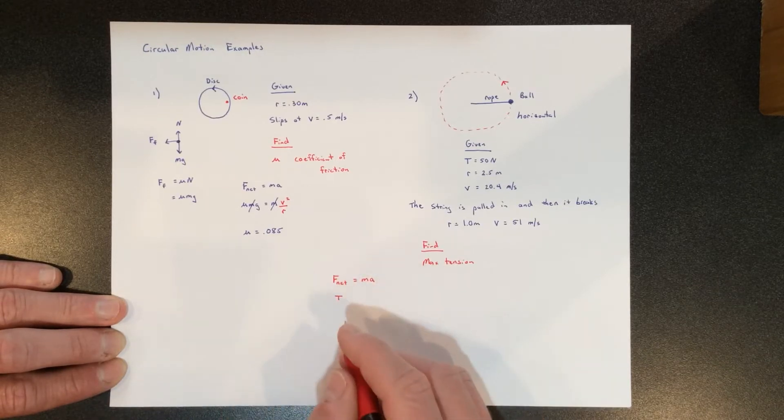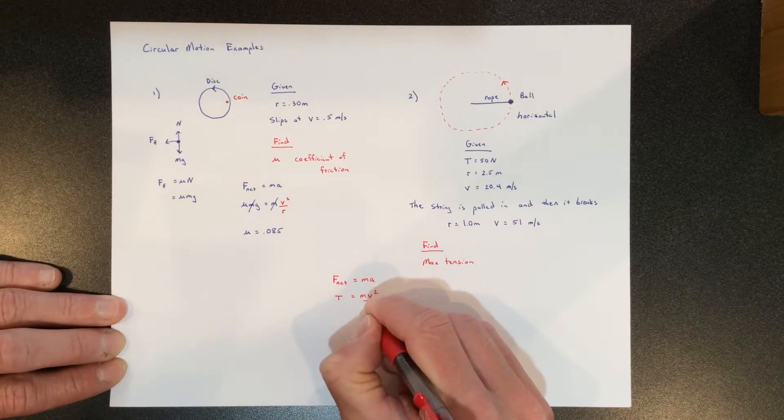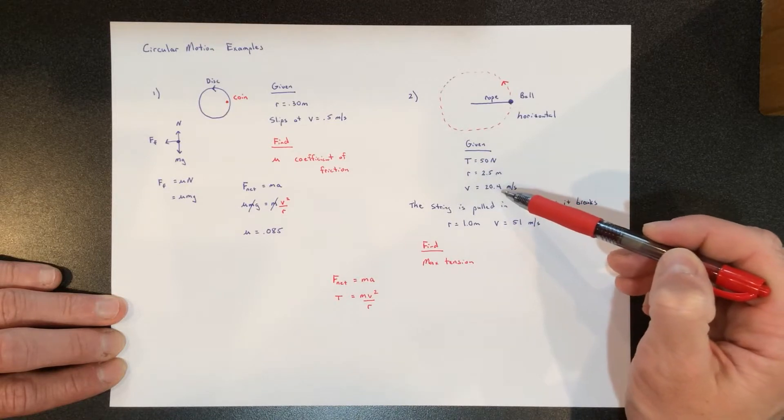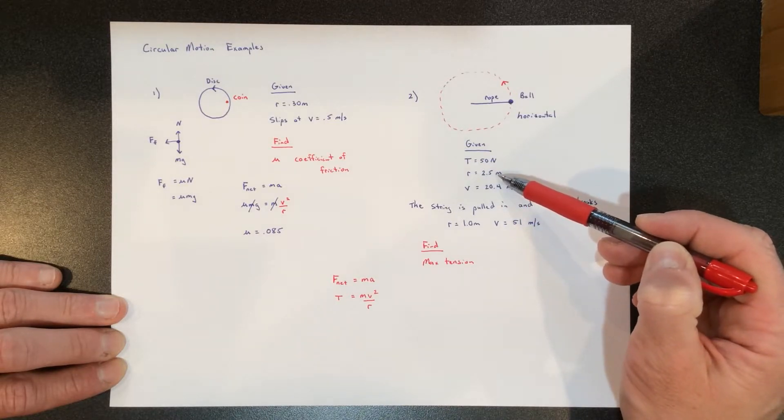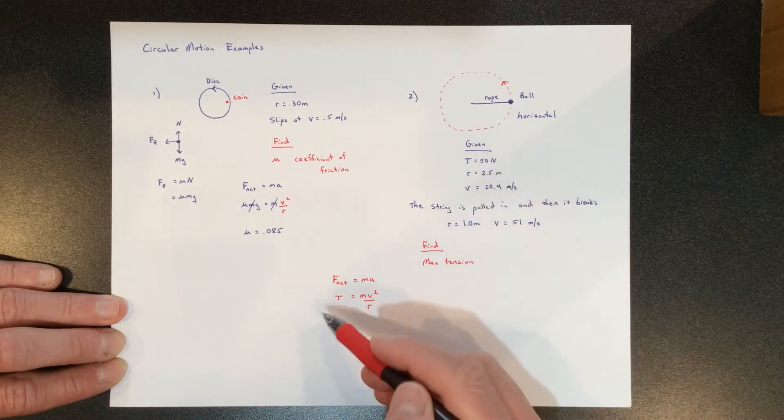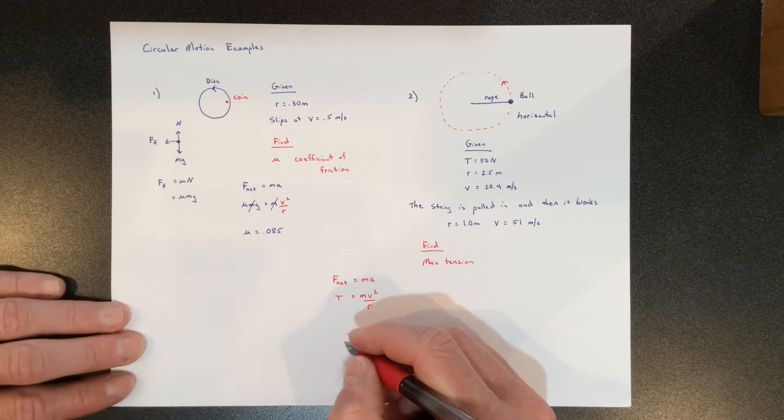We have f equals ma. Again, what's causing circular motion? The tension, and there are no forces opposing that. That's equal to m v squared over r. We know that when we're doing this velocity at this radius, we have that tension, and this information, plugging in, allows us to find the mass of the ball.